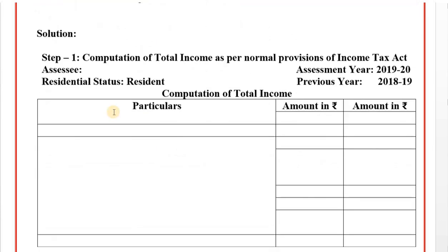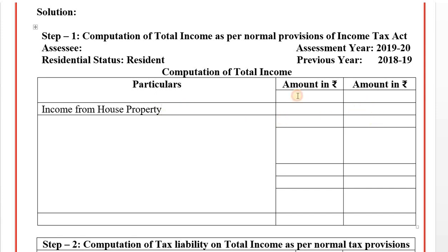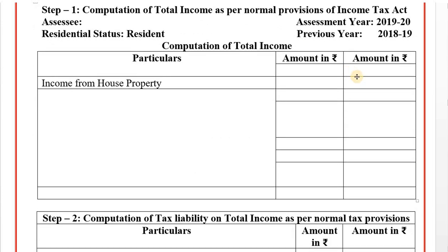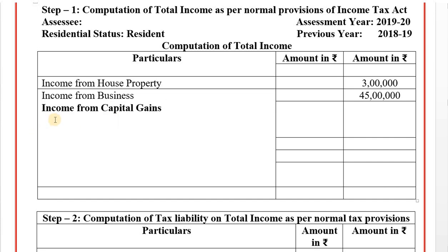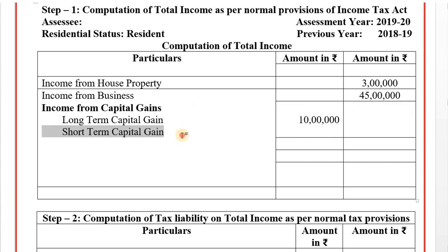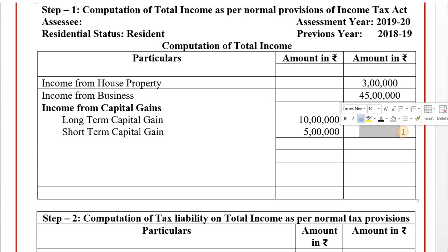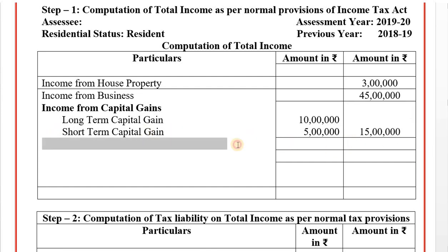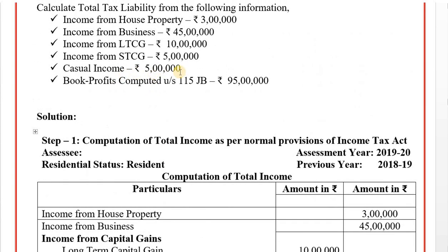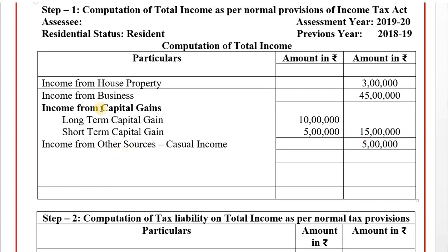We will first add up the income heads. Income from house property: 3 lakhs. Income from business: 45 lakhs. Income from capital gain — long-term capital gain: 10 lakhs; short-term capital gain: 5 lakhs; total income from capital gain: 15 lakhs. Income from other sources — casual income: 5 lakhs. Total gross income: 45 plus 3 plus 15 plus 5 equals 68 lakhs gross total income.